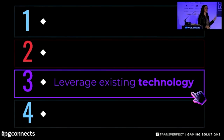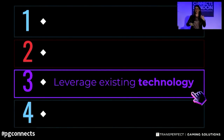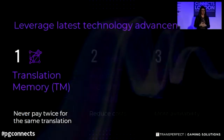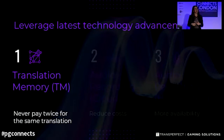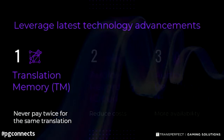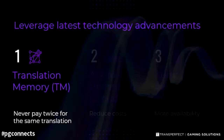The third consideration is leveraging existing technology. There are a few things related to localization that can be really helpful in developing your game for other markets. The first is translation memory — a tool or database that saves all the content you've previously translated. Why does that matter? It means you'll have a consistent experience across all your channels and platforms, and you'll never pay twice for the same translation, giving you cost savings. It also standardizes how translators work across app, web, coded, XML, CSV, and JSON files.